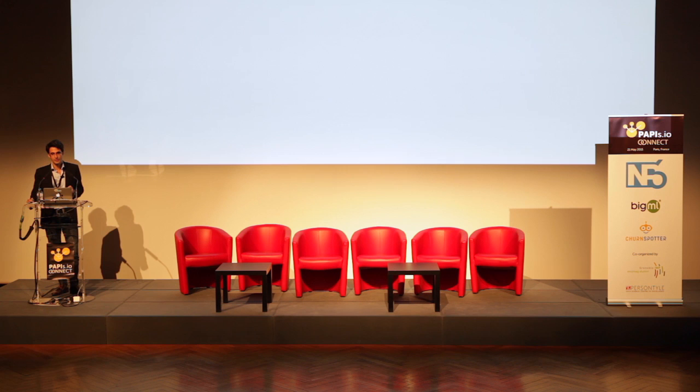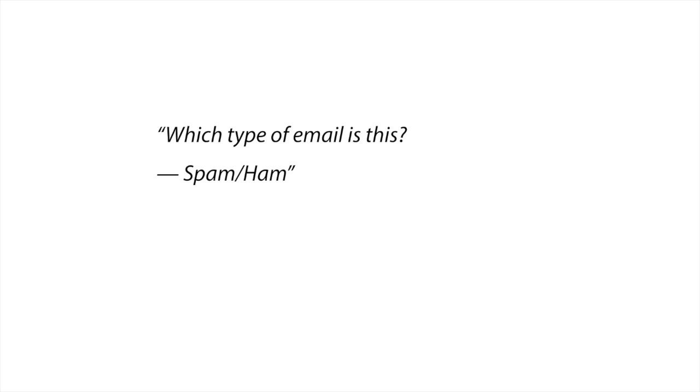What the spam filter does is it answers a question: it gets a new email it's never seen before and, before you even see it, it's going to predict whether or not you're going to be interested in that. The question is: which type of email is this? And there are two possible answers — spam or ham. We say this is a classification problem because we're asking a question and there's only a fixed set of possible answers, which are called classes.